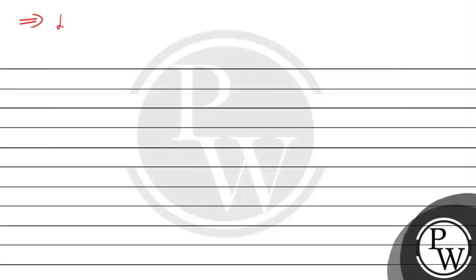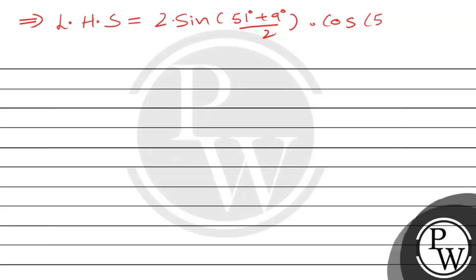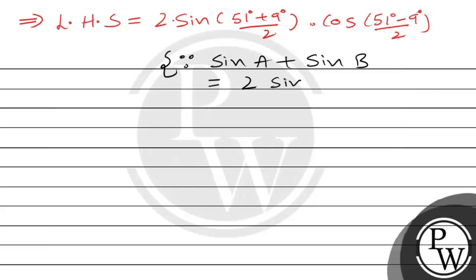This implies the left-hand side equals sin 51° + sin 9°. Now we apply the sin A + sin B formula: 2 · sin((51° + 9°)/2) · cos((51° − 9°)/2), because sin A + sin B = 2 · sin((A+B)/2) · cos((A−B)/2), as given in our key concept.